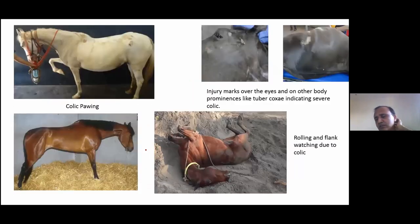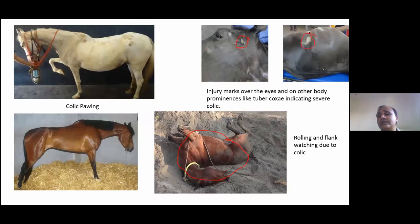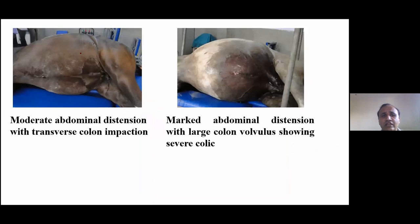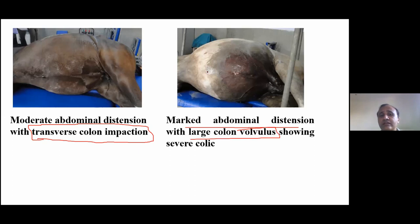When taking a history from a colicky horse, look for pawing, stretching of front and hind legs, sweating, lying down, and rolling. Injury marks near the eye or tuber coxae indicate the animal has been rolling extensively. Abdominal distension may be present. Moderate distension may indicate transverse colon impaction, while marked distension with severe colic suggests large colon volvulus with possible intestinal strangulation.